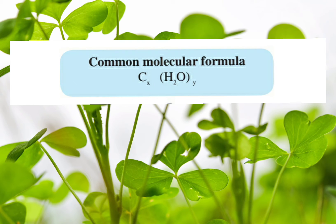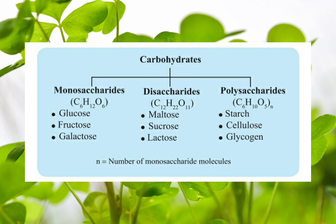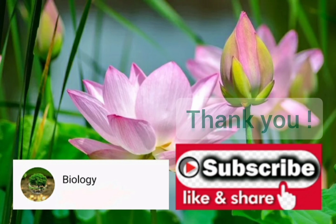The common molecular formula of carbohydrates can now be seen on screen. Carbohydrates can be classified into three groups: monosaccharides — examples include glucose, fructose, and galactose; disaccharides — examples include maltose, sucrose, and lactose; and polysaccharides — examples include starch, cellulose, and glycogen.